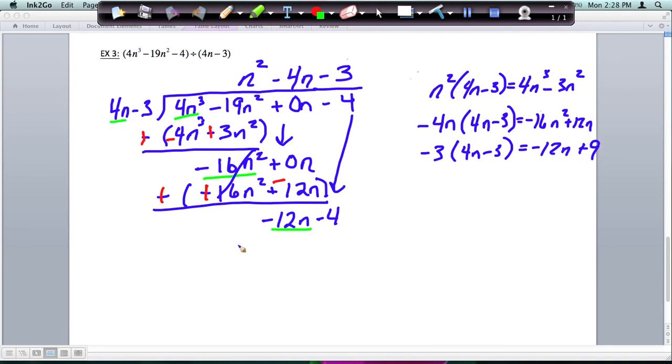So I'm going to subtract my negative 12n plus 9. So I am subtracting that. And I'm going to go ahead and change my signs. That becomes positive. This becomes negative. And then the 12n's cancel. Negative 4 minus 9 is negative 13. So the remainder,